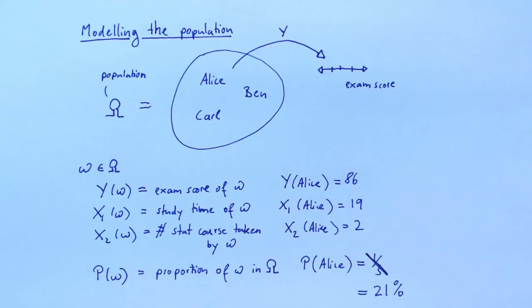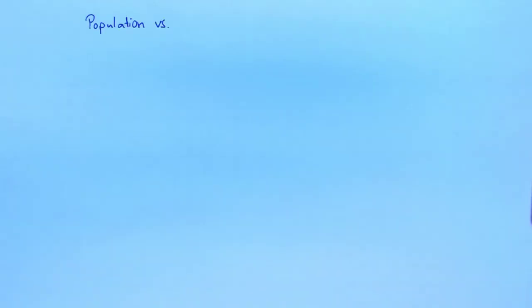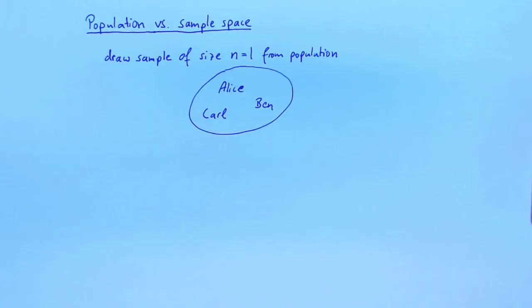Next, we will establish a relationship between our population and the outcome of a certain random experiment. This will also make it clear why I reuse concepts from probability theory to describe my population. The random experiment that we are looking at is drawing a sample of size n equal 1 from our population. What are the possible samples that we may draw? We may draw Alice, Ben or Carl.